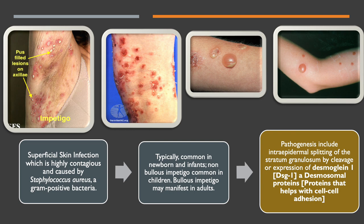Pathogenesis includes intra-epidermal inflammation or splitting of the stratum granulosum by cleavage or expression of Desmoglein 1. Desmoglein is a desmosomal protein that helps with cell-to-cell adhesion and maintains tissue integrity.